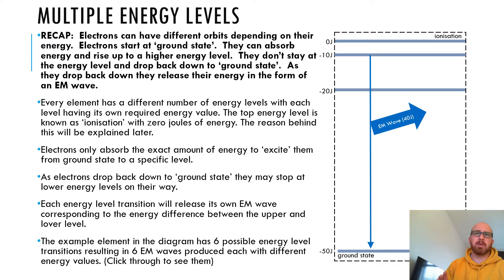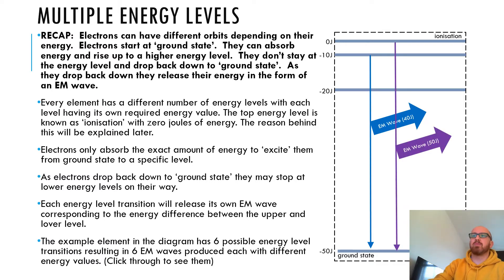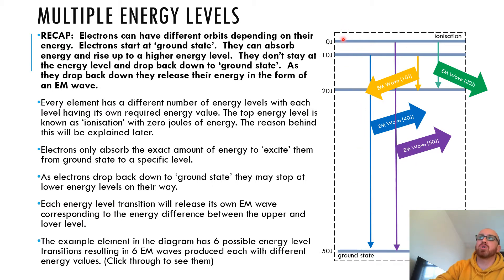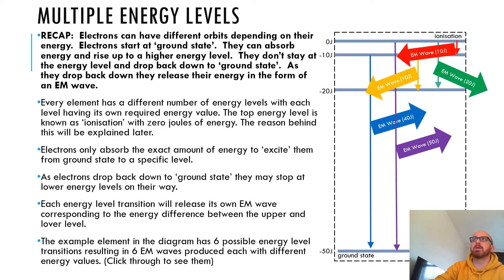This one would go from zero to minus 50, so 50 joules of energy. This one would be from minus 10 to minus 20, so 10 joules. This one would be from zero to minus 20. When it goes from ground state, it can jump up to different levels. Say it jumped up to the top one — it can drop down, stop for a bit, then drop further, stop, then drop to the bottom. Or it could just drop straight from top all the way to the bottom. This one going from here to here would give you 20 joules, and this one 10 joules.